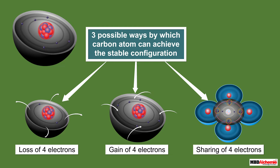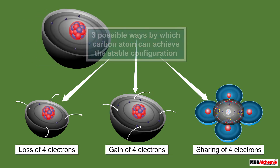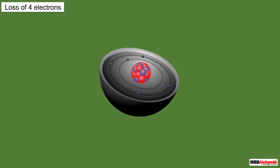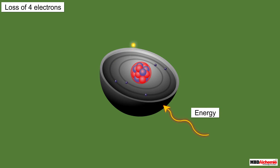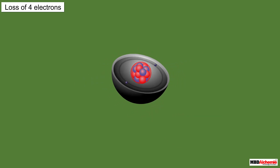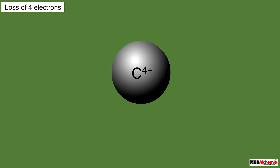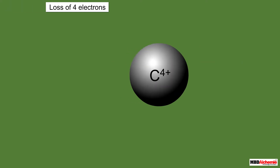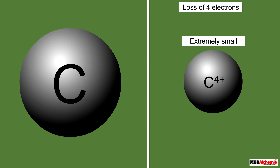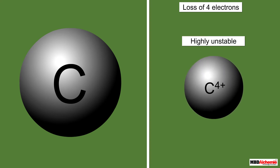The first possibility is the loss of four valence electrons. Removal of an electron from an atom requires some energy, so the removal of four electrons from a carbon atom would require a lot of energy. The loss of electrons would result in the formation of a cation with only two electrons and six protons. The size of this cation would be extremely small and it would be highly unstable, so this possibility is ruled out.